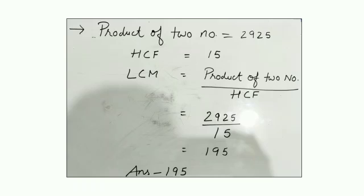Next sum. Product of two numbers is 2925 and HCF is 15, and you have to find LCM. To find LCM, there is a formula: product of two numbers divided by HCF. What is the product of two numbers? 2925. And what is HCF? 15. When you divide 2925 by 15, you get 195. So our LCM is 195.